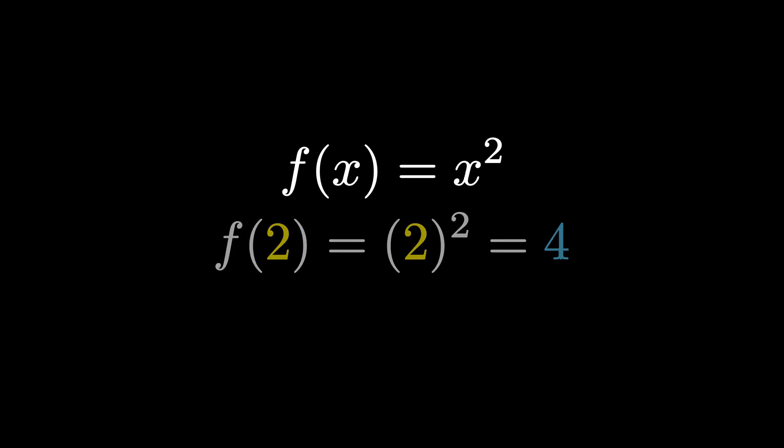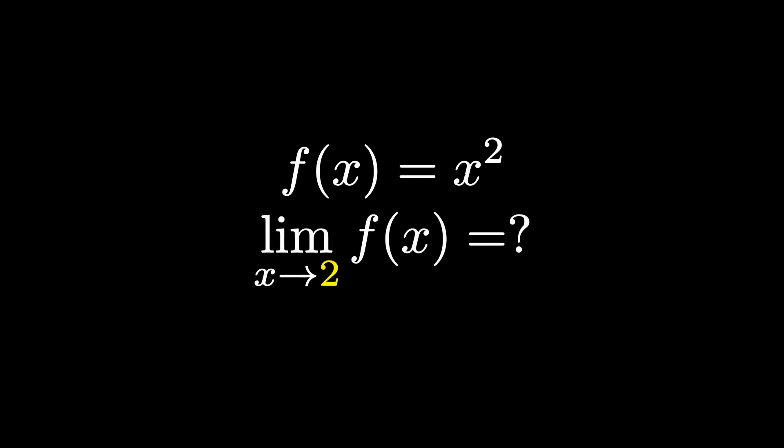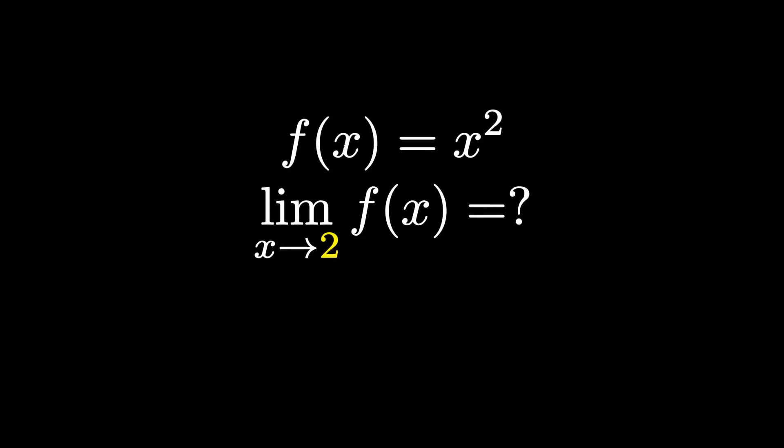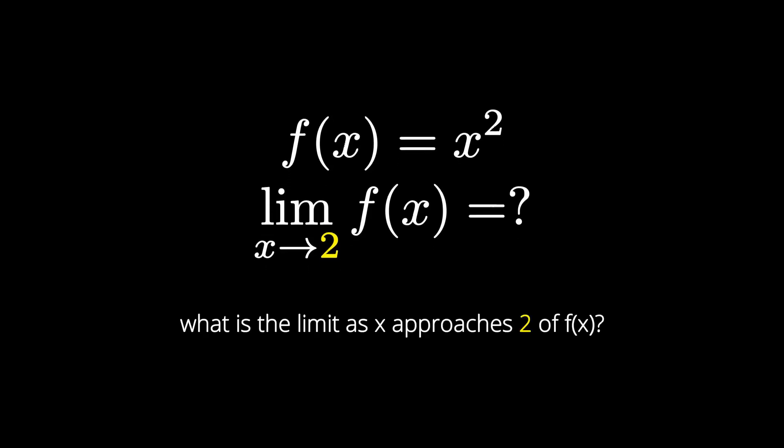But what if we had to evaluate this? What is this right here — how would we even say this? This is basically saying: what is the limit as x approaches 2 of f of x? Now, with limits, the whole idea is finding out what's happening to f of x as we approach our x value. And in this case, our x value is 2.